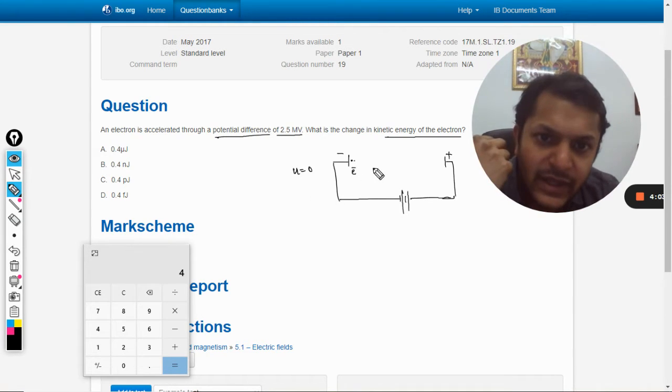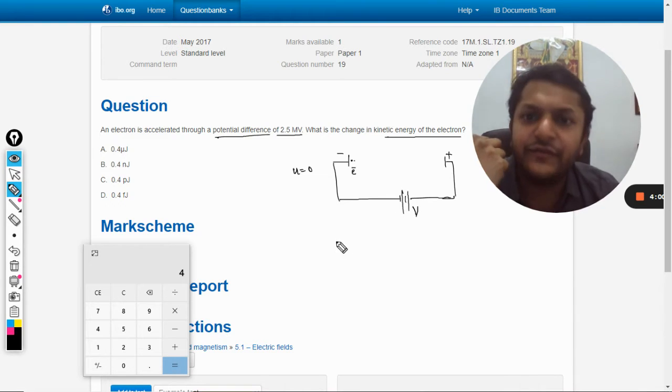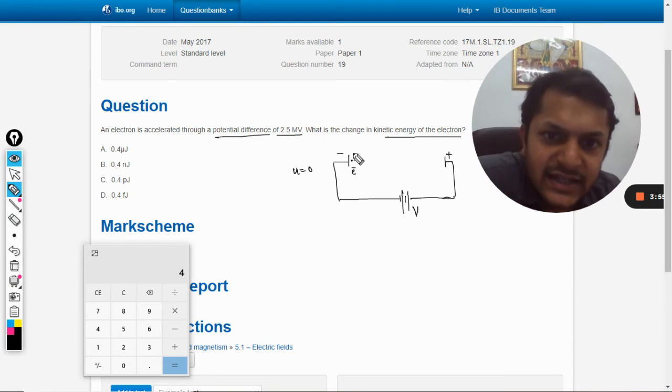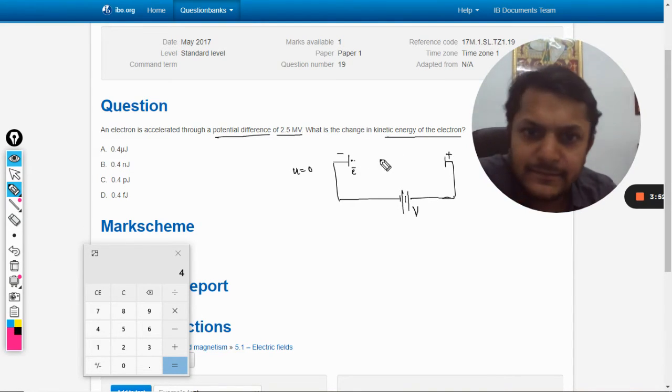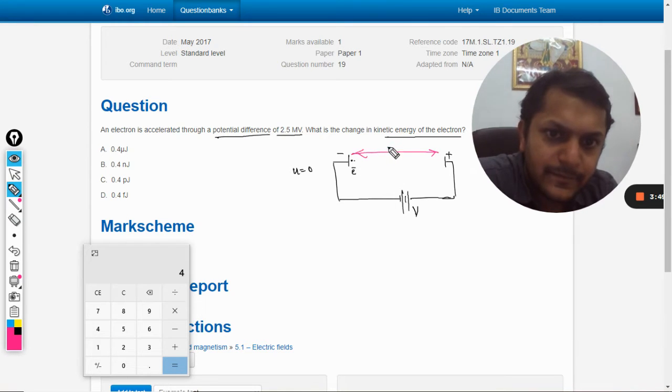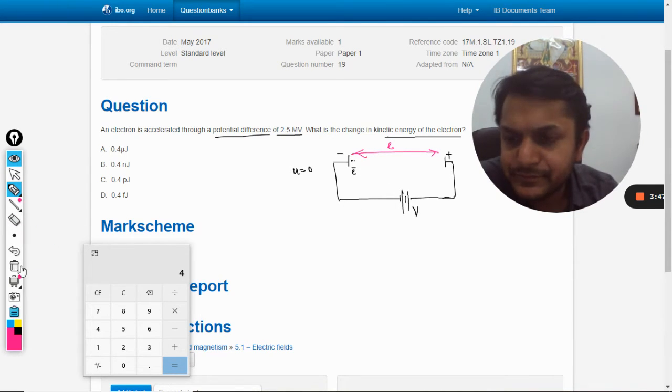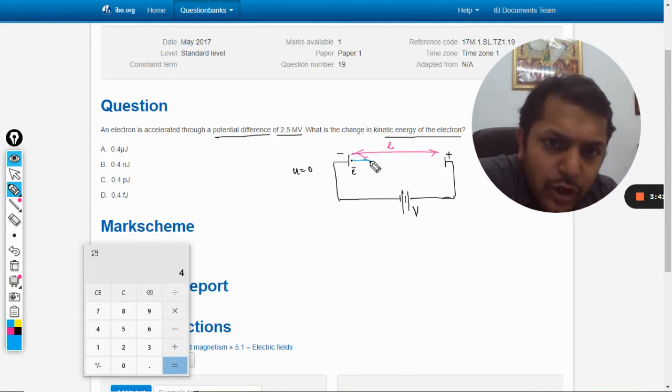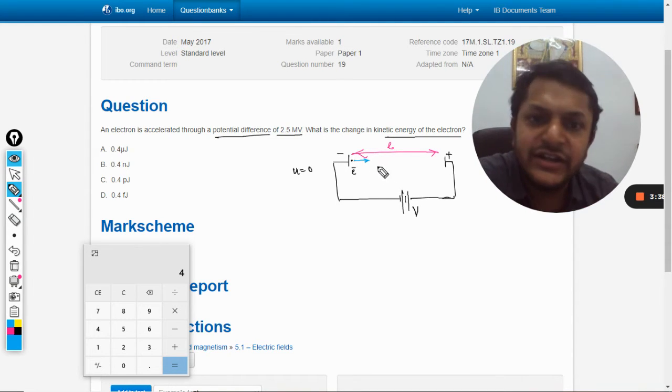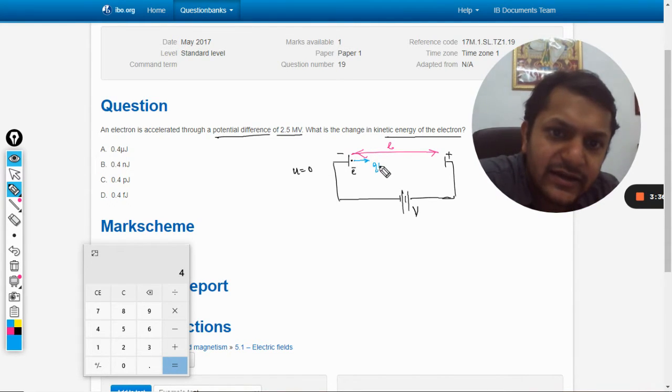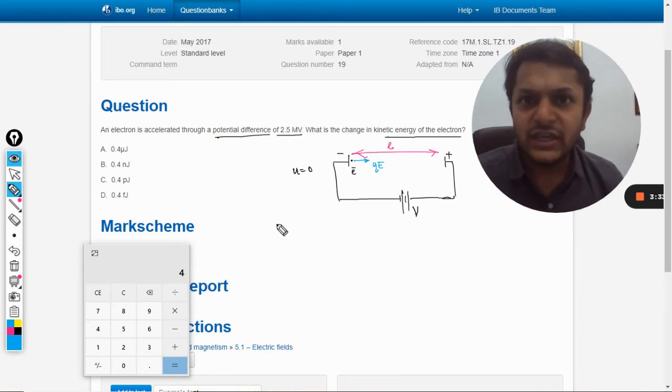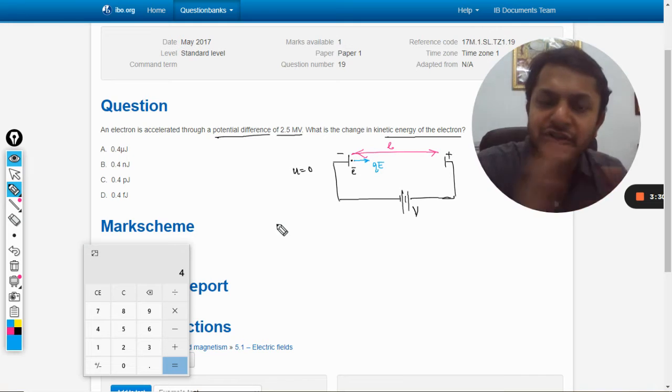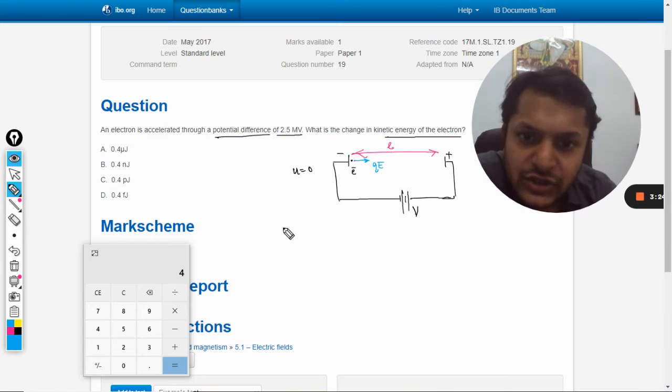This is the voltage V, and this is the charge E. So what happens is the gap between this is L. Now this electron will be acted upon by a force. There will be an electric field here and that force will be Q into E. E is the electric field which is going from positive to negative side, so this electron is getting pushed here.